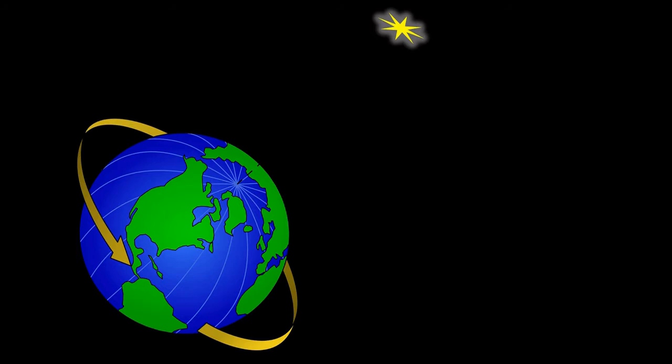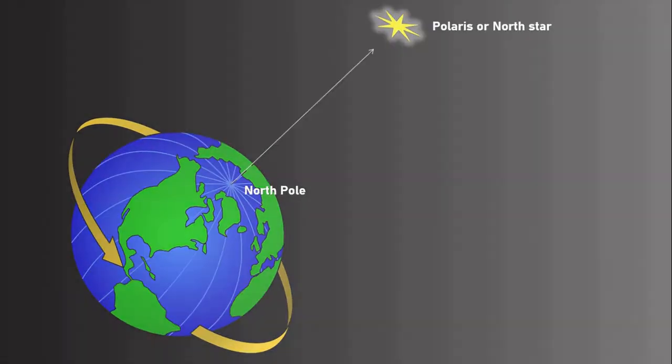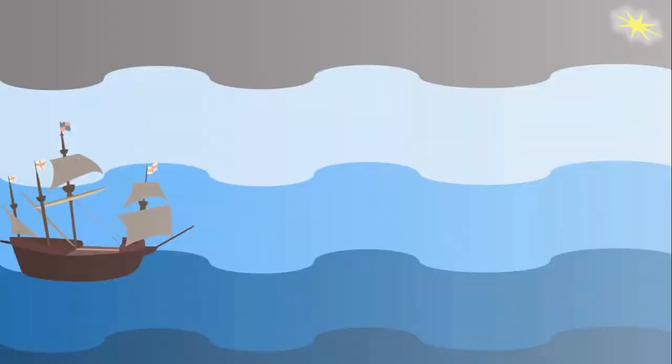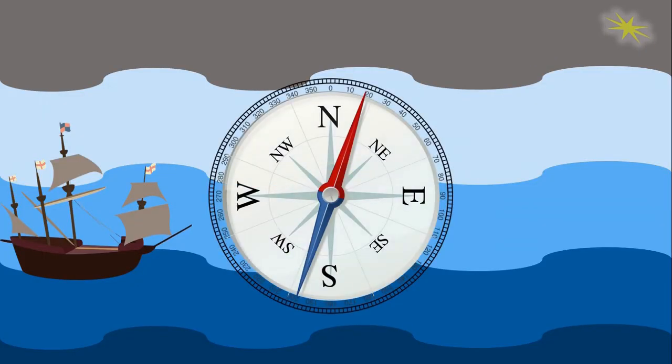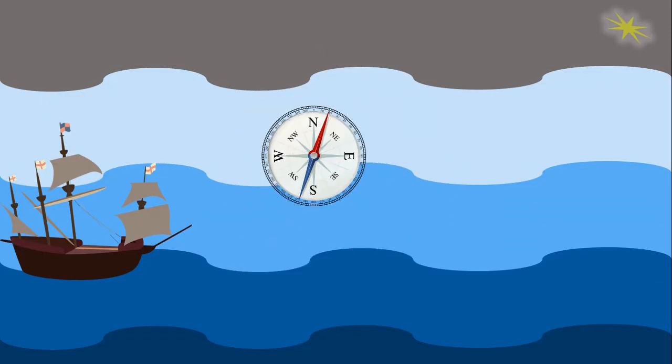The Earth's axis of rotation has a reference point in space, which is Polaris, or the North Star. The North Pole of the Earth always points towards the Polaris. In old times, this knowledge was used by sailors for navigation purposes.